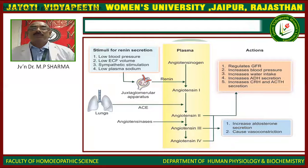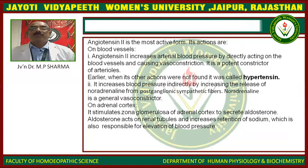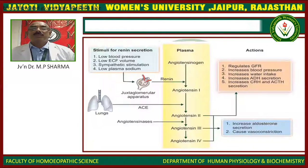Angiotensin-2 regulates the glomerular filtration rate, increases blood pressure, increases water intake, increases antidiuretic hormone, and increases GFR and capillary pressure.